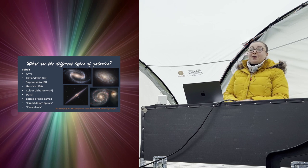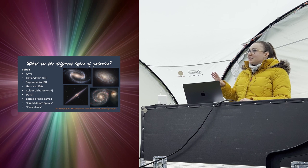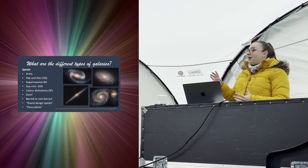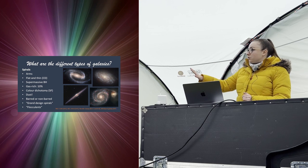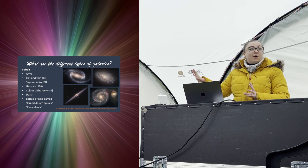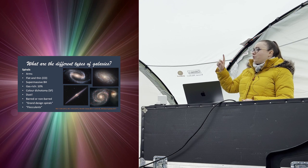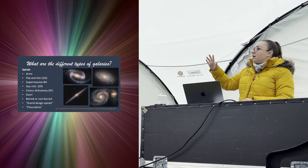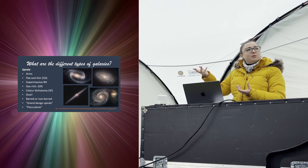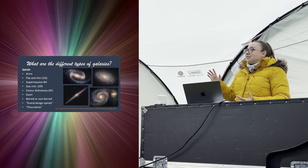Next up, spiral galaxies — the pretty boys of the galaxy collection. Their name comes from their spiral arm structure, which varies greatly. Sometimes the arms are really well defined, like in the Whirlpool Galaxy at the bottom right, with two beautiful well-defined arms. Other times they're more flocculent, like NGC 4414 in the top right — it has spiral arms but they're kind of fluffy and not well defined.